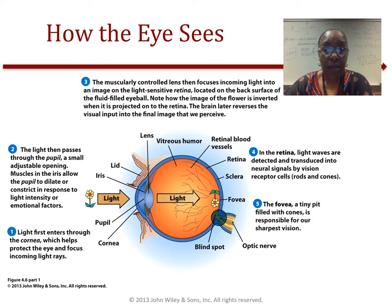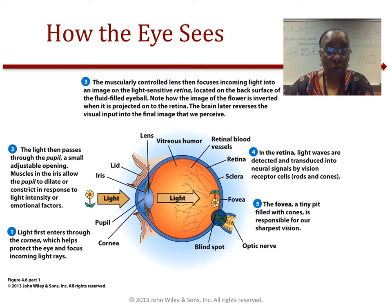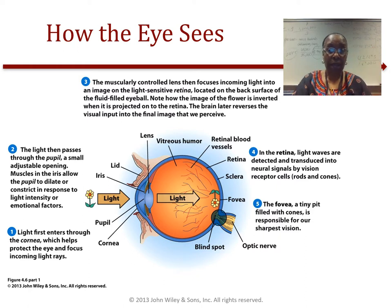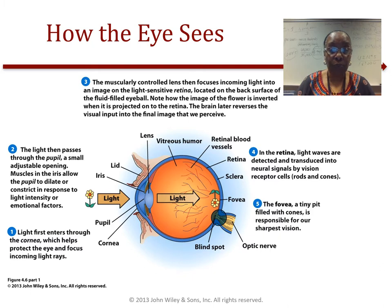Using this slide, you can get an idea of how we see. Light first enters our cornea, which helps protect our eyes and focuses those light rays. The second step is where light passes through the pupil, which helps with adjustments.